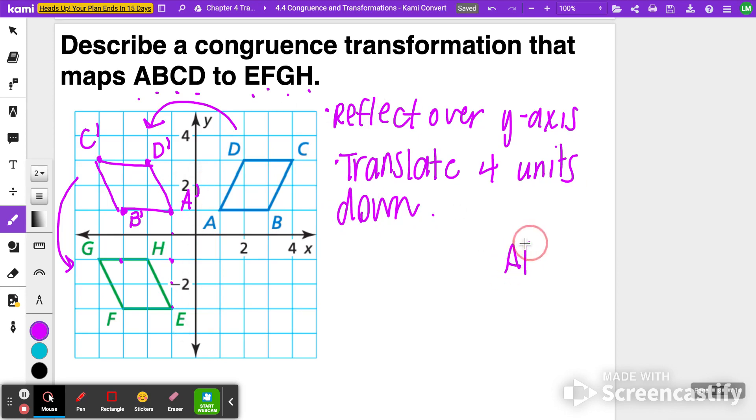One more time, because ABCD is written in that order, and EFGH is written in that order, A needs to match up with E, B to F, C to G, D to H. So when I do that, all I need to do is drag it down four units.